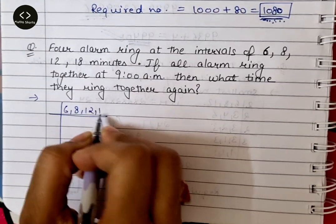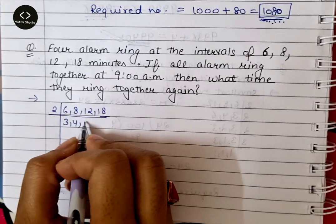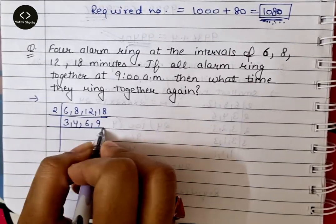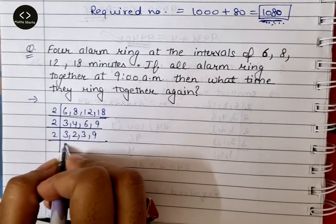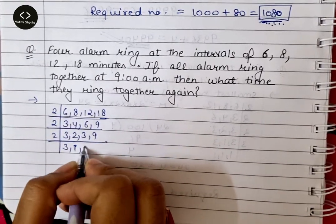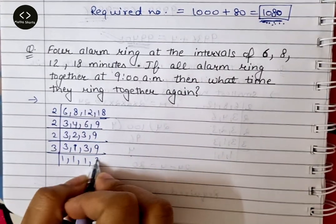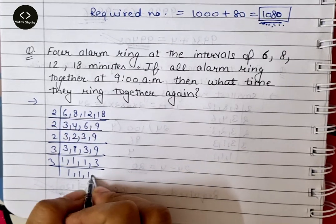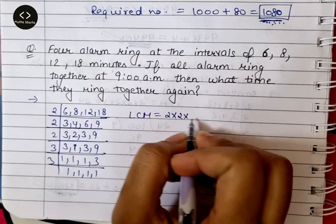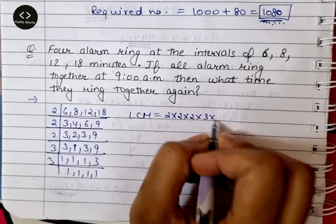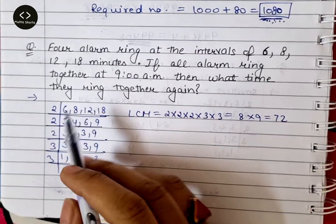6, 8, 12 and 18 का हम LCM find out कर लेते हैं। सबसे छोटे prime factor पर cancel करते हैं। LCM आया हमारे पास: 2 × 2 × 2 × 3 × 3 = 8 × 9 = 72।